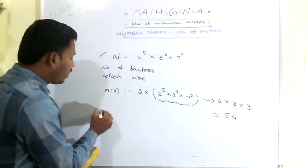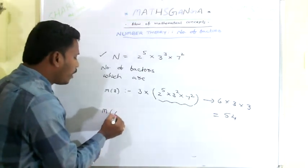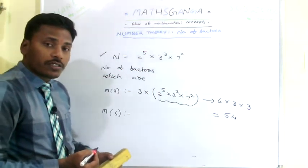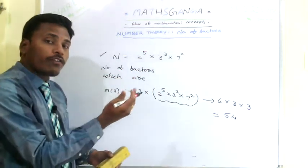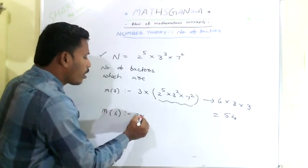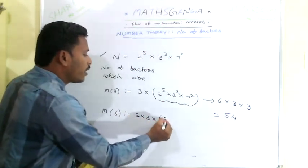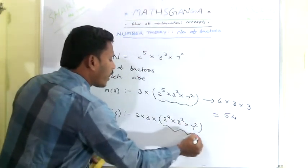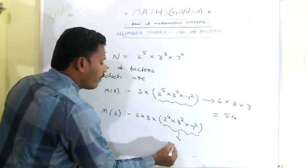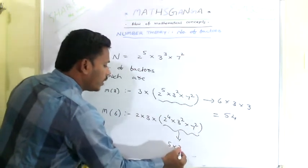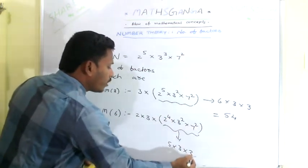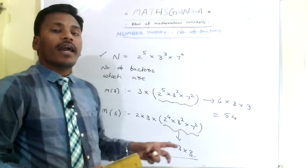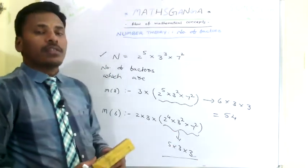If anybody asks you to find the number of factors which are multiples of 6, separate one 2 along with one 3. Then the remaining number is 2^4 × 3^2 × 7^2. The number of factors for this is (4+1)(2+1)(2+1) = 5 × 3 × 3 = 45. So there are totally 45 factors which are multiples of 6.